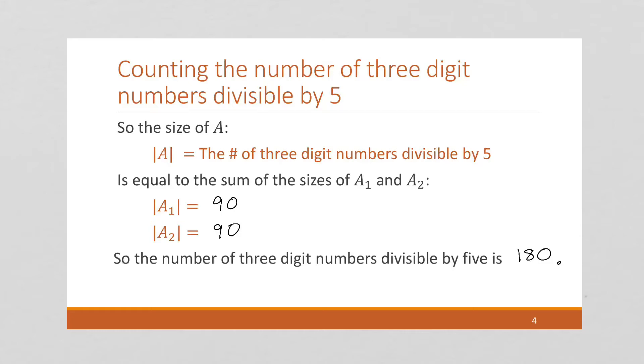And again, here we can use the addition rule because I want to think, can I pick a number, a three-digit number, that is divisible by 5? Well, I can't pick one that ends in both 0 and 5. The number I pick will end in 0 or it will end in 5, and that gives us the addition.